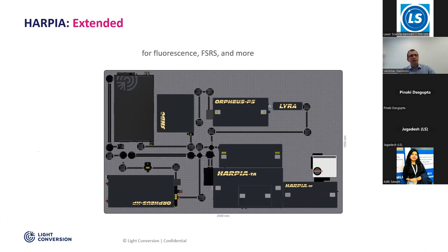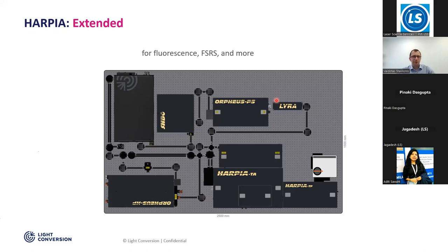An even more complex system includes the laser, a femtosecond OPA called Orpheus HP, and also a picosecond OPA. In the ytterbium or titanium-sapphire line you can generate a picosecond beam from the femtosecond source to make a shorter bandwidth OPA. Then you have a third beam with a separate chopper, separate delay line, polarization controller, main Harpia TA module, Harpia TF for fluorescence, and an external spectrograph.